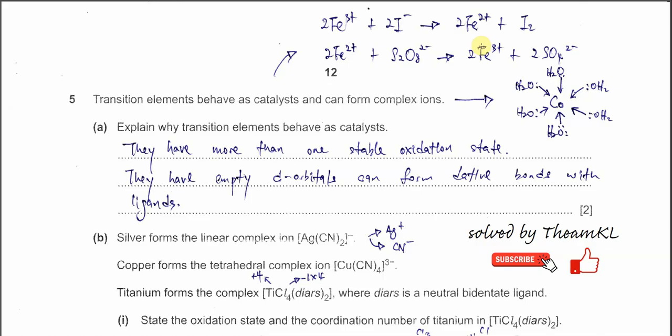Of course, we know that most transition elements can form dative bonds with ligands. For example, if we have a cobalt ion, it will form, let's say, 6 dative bonds with water molecules. The overall charge would be 2 positive. The same thing will happen for reactions between iron 3 and iodine. When they react, bondings will form and eventually it will go through the whole reactions. So for part A, explain why transition elements behave as catalysts.